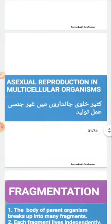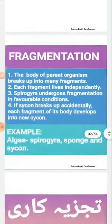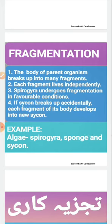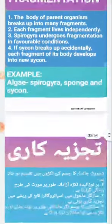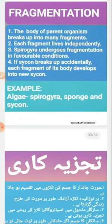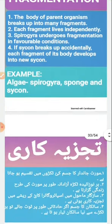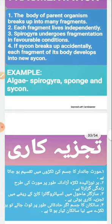Now we will see asexual reproduction in multicellular organisms. The first method is fragmentation, called tajziyakari in Urdu. This occurs in Spirogyra (an alga) and in marine animals like sponges and Sycon.